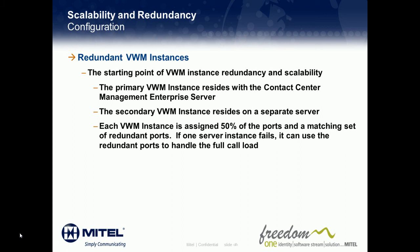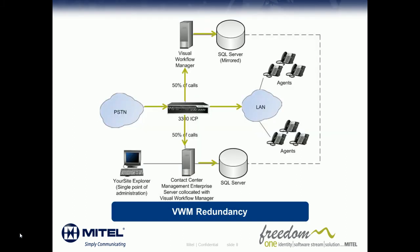Now let's take a look at how this works. Here, you'll notice that calls come in from the PSTN and are then routed to a 3300 ICP controller, which routes 50% of the call load to both instances of the Visual Workflow Manager server — one standalone remote instance and the other co-located with the enterprise server. In this configuration, we have two SQL Server databases, which are mirrored to provide single point of administration through your site explorer. Ports are interleaved on the telephone system to distribute 50% of the call traffic to each Visual Workflow Manager instance, and each instance has an equal number of active and redundant ports.